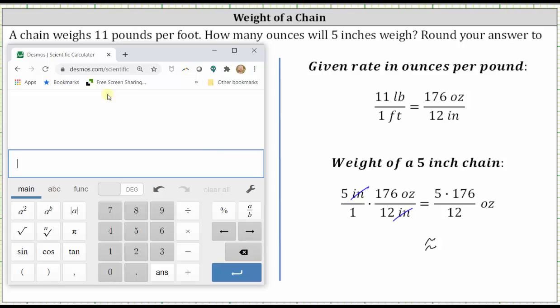I'm going to go ahead and use the fraction format key, A over B. In the numerator, we have five times 176. Click on the denominator, enter 12, and enter. We're told to round to the tenths place value, giving us approximately 73.3 ounces.